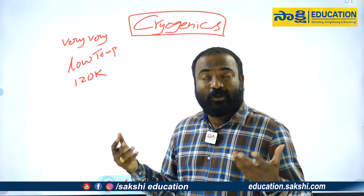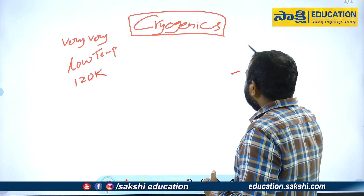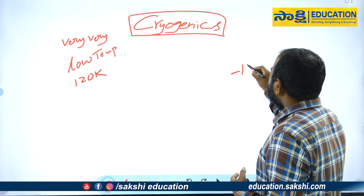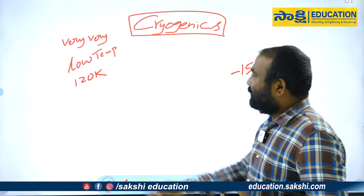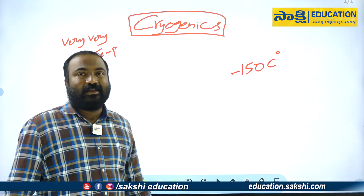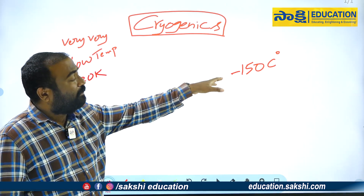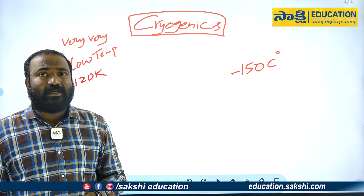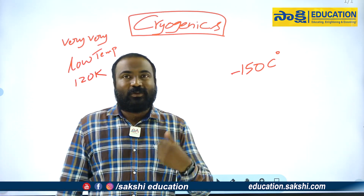We can say that there are gases below this temperature. We can say that we are looking at minus 150 degrees Celsius. Here we use Kelvin, and here we use Celsius. We will maintain that and talk about cryogenic temperatures.